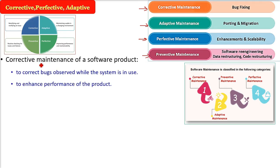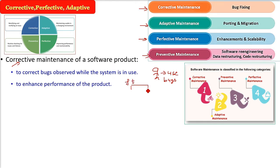Corrective maintenance is all about bug fixing. Corrective means to correct something that is wrong. If you deliver the software to the user and they start using it, the user may observe certain problems and come back to you. You will then fix the bugs. For example, if a file transfer speed is not what was wanted, you go back to the developer who says he needs enhancement in performance. This is a kind of corrective maintenance.